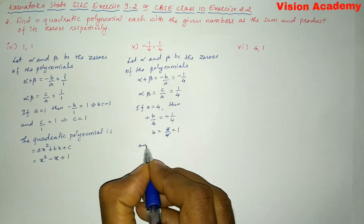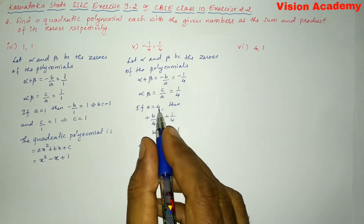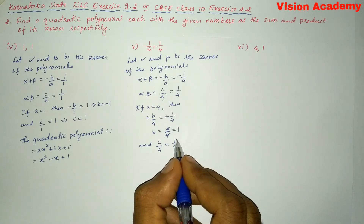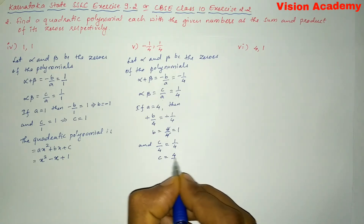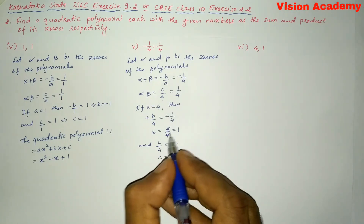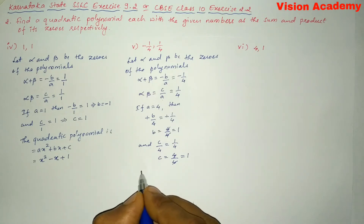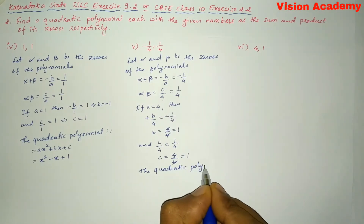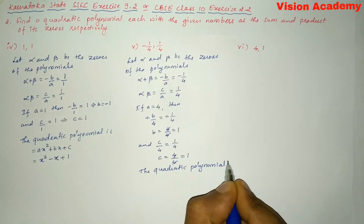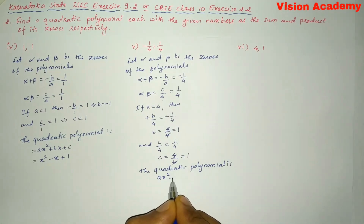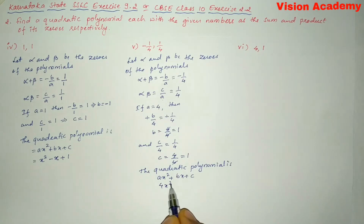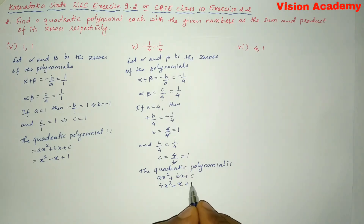And C by A with A equal to four: C by four equals one by four, so transforming four gives C equal to four divided by four, which is one. So C equal to one. Therefore, the quadratic polynomial is — general formula AX squared plus BX plus C — four X squared plus X plus one.